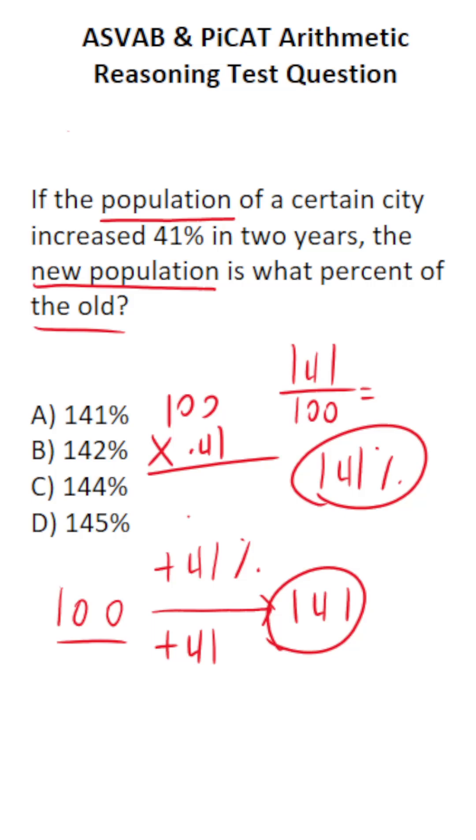Again, we didn't have to work that out because I set up this question to use nothing but mental math. So this one is A. Its new population is 141% of its old population.